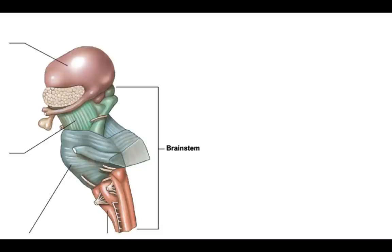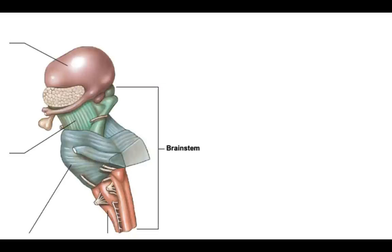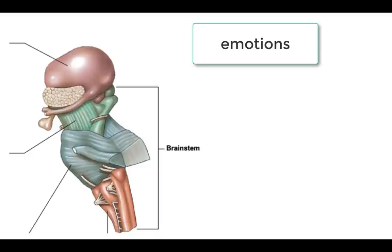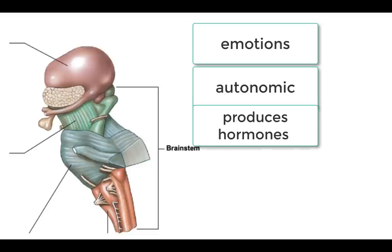The largest part of the diencephalon is the thalamus, often nicknamed the final relay station, because all sensory information has to synapse here before it goes to its respective areas in the cerebrum. The hypothalamus has many functions: it has centers for emotions, which it shares with the limbic system, it has autonomic function, and it also produces hormones.